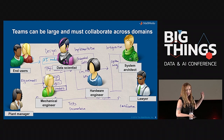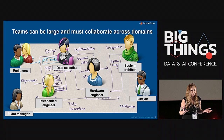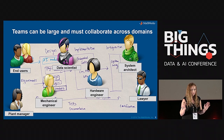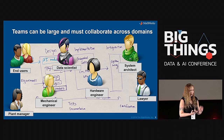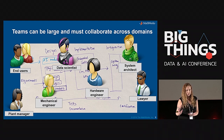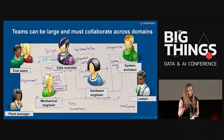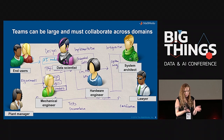There are lots and lots of people involved, especially with something like a vehicle. You have end users — in this case, just a driver of a car. You have managers, data scientists, system architects, engineers working together, plus lawyers, plant managers, and all sorts of different skill sets with different concerns. You need to communicate these things. The way you talk about your AI model to the system architect is very different from what you say to the lawyer. These are the kinds of things you need to think about before you even start building the model.